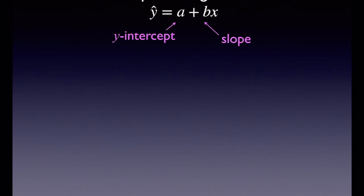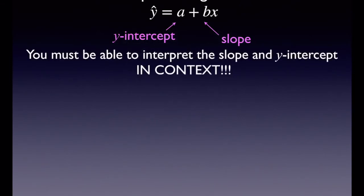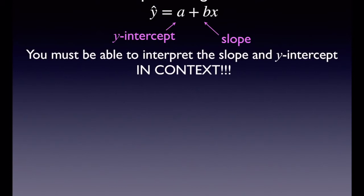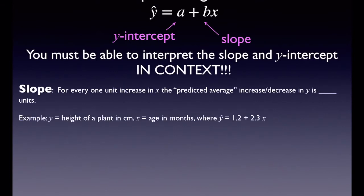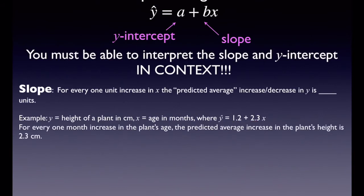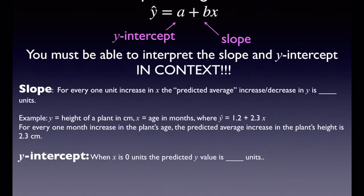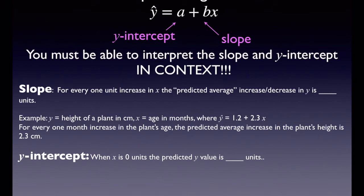Now let's practice interpreting the slope and the y-intercept in context — two of the four interpretations you need for this chapter. I'll put up the template and the height-and-age example. Pause the video and see if you can interpret the slope. For every one month increase in the plant's age, the predicted average increase in the plant's height is 2.3 centimeters — because the number connected to the x variable is your slope. Now let's try the y-intercept. Pause and see if your sentence matches: when the plant is zero months old, the predicted height is 1.2 centimeters.